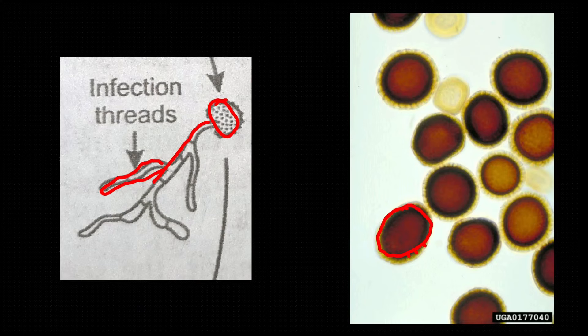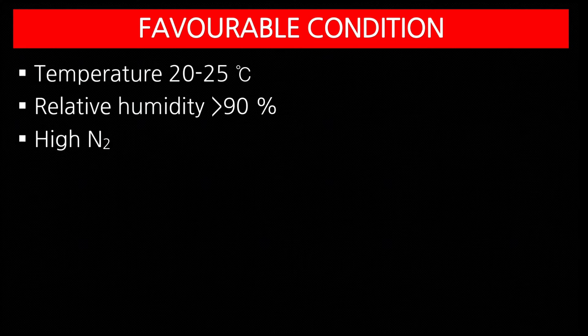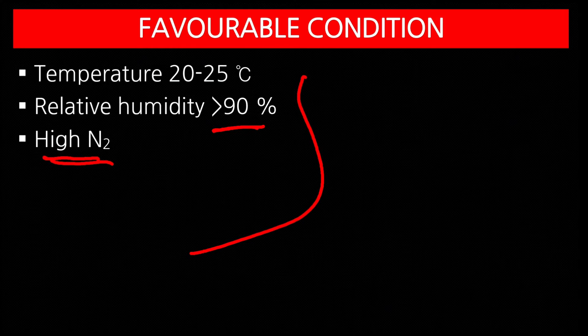Favorable conditions for loose smut: temperature 20–25°C, relative humidity more than 90%, high dose of nitrogen, and susceptible variety.